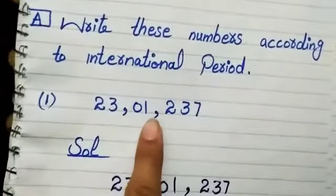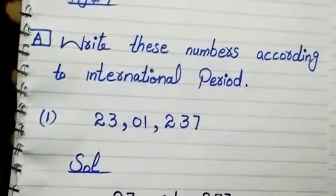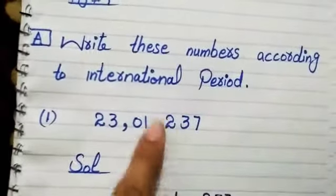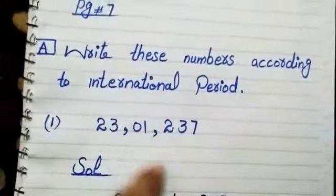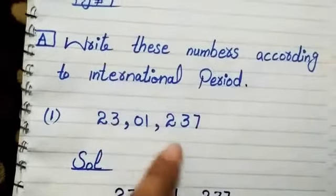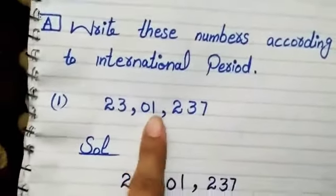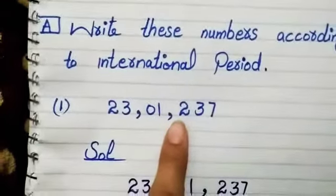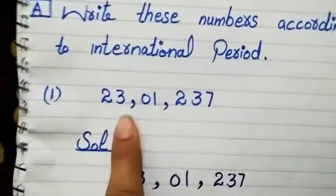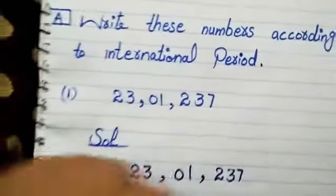The numbers are given in Pakistani periods and we will change them to international periods. In Pakistani periods, commas are used after 2 digits. In international periods, we will use commas after 3 digits.